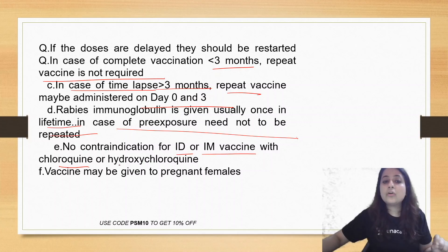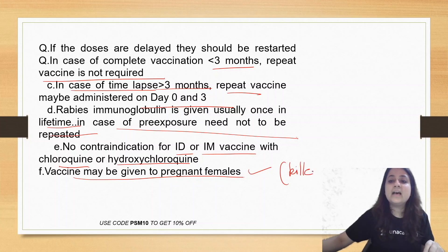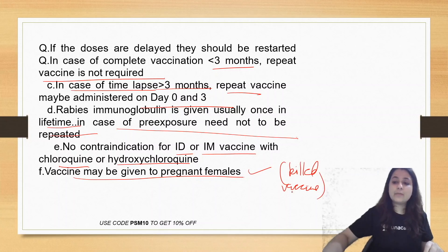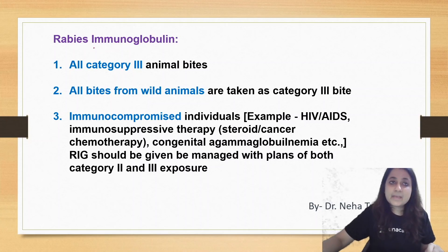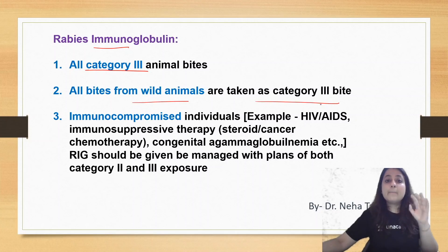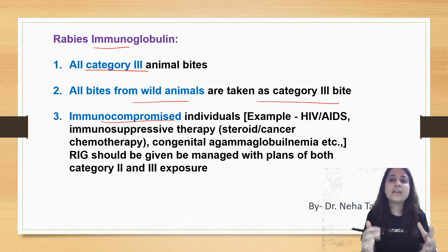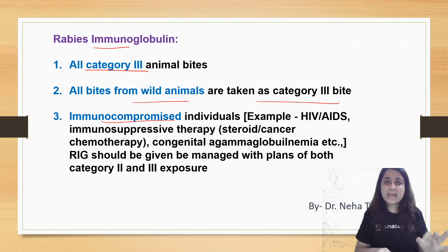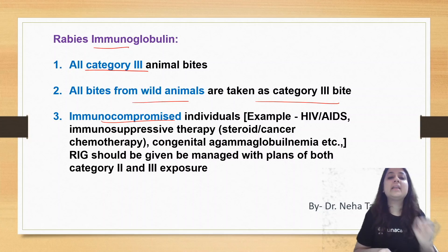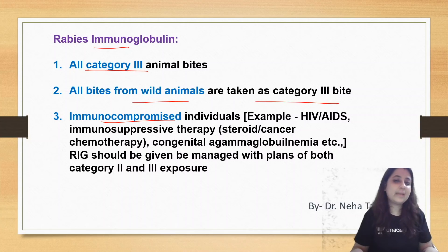There is no contraindication for intradermal or intramuscular vaccine with chloroquine or hydroxychloroquine. The vaccine may be given to pregnant females as it is a killed vaccine. Regarding rabies immunoglobulin: all category three bites and all bites from wild animals are treated as category three. Additionally, for immunocompromised individuals such as HIV/AIDS-positive patients who suffer a category two bite, you will also give immunoglobulin. I hope you understood the management of rabies — this is a must-know for all entrance examinations.